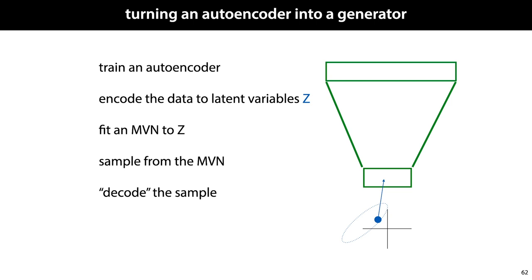We fit a multivariate normal distribution to this set of points, z. We sample from the multivariate normal distribution. And then we decode the sample. This is just like the generator network we saw earlier, except that the input distribution is not a standard normal distribution, but a specific normal distribution covering the place where the latent representations ended up after training.